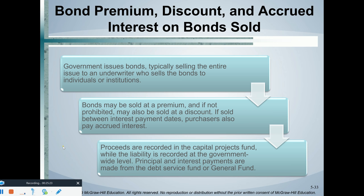If we sell bonds between interest payment dates, we're going to collect interest from our bondholders — similar to what you learned in prior accounting classes. We collect that extra interest from the last interest payment date to the sale date of the bond. Then on the first interest payment date, we pay back the bondholders a full amount of interest — essentially paying them back some of the interest they prepaid us.